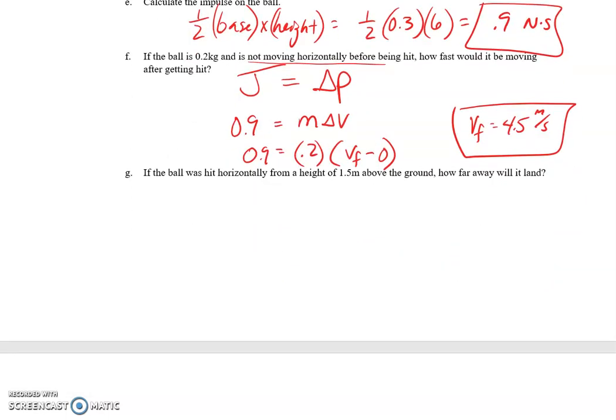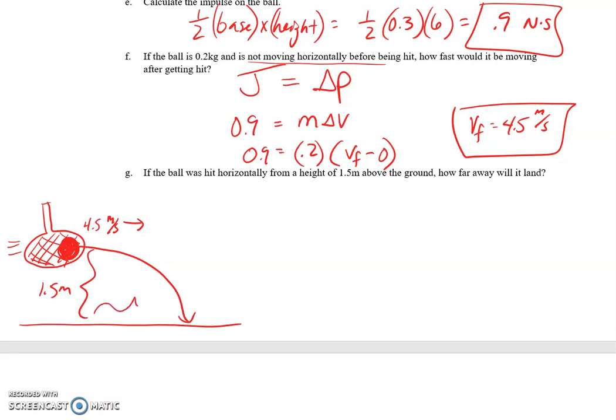Last part is, if the ball was hit horizontally from a height of one-and-a-half meters above the ground, how far away will it land? So, terrible drawing of the tennis racket. Over here, hits the ball. We know the ball moves to the right at four-and-a-half meters per second. And it's from a height of one-and-a-half meters. We want to know the range, delta x.